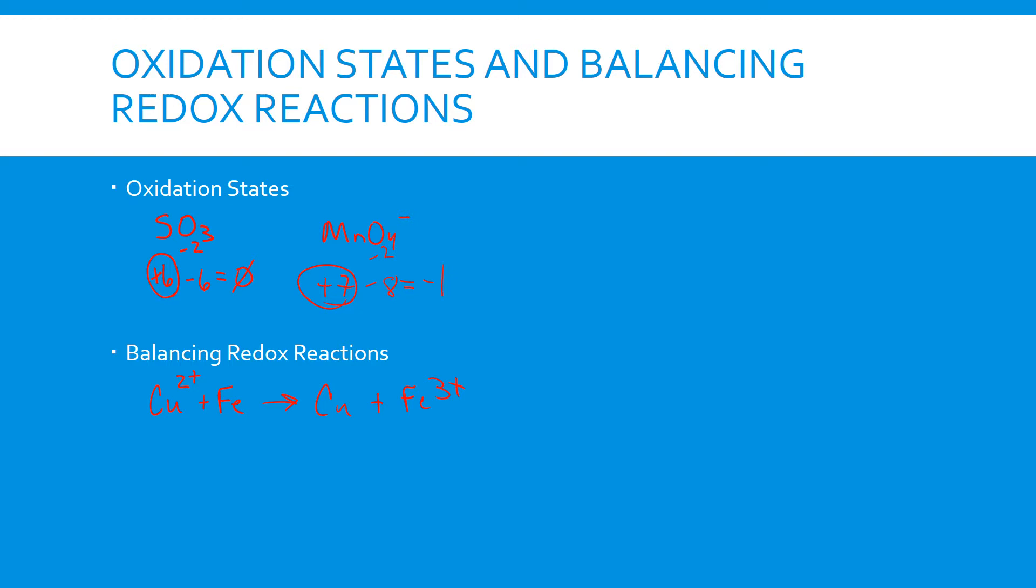This copper goes from 2+ to 0, so that means that it is reduced. So copper is reduced, and it is reduced by 2 electrons. The iron is going from 0 to plus 3. So that means it's oxidized because it's going up in charge. And it's oxidized by 3 electrons.